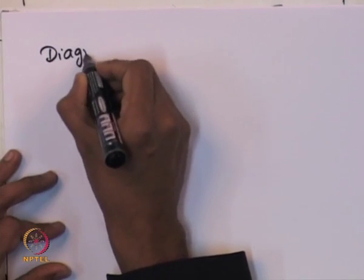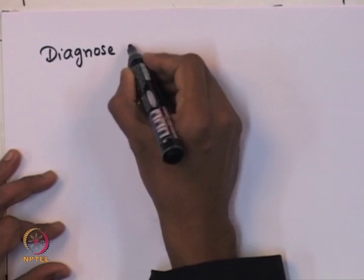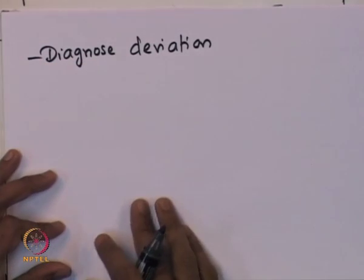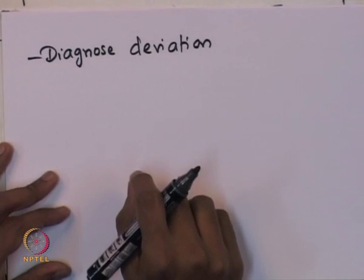We have seen how to write performance equations for ideal reactors like plug flow reactors or under mixed conditions, and we also know how to write performance equations for CSTR. It is important to diagnose the deviation from ideal behavior.